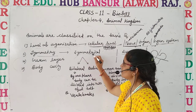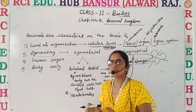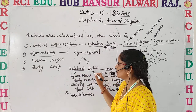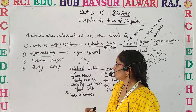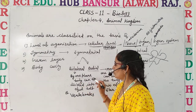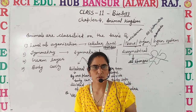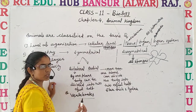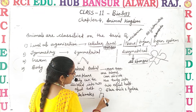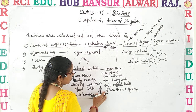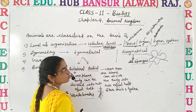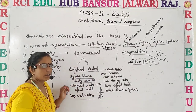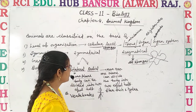Symmetrical organisms can be divided into two equal halves through one or more planes. These organisms are divided into two types: bilateral symmetrical and radial symmetrical. In bilateral symmetry, the body can be divided into two equal halves only through a single plane. For example, human beings can be divided into two equal halves through one plane. All vertebrates come under this category.